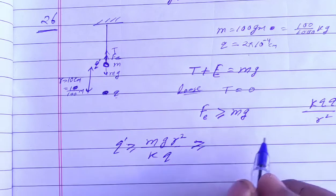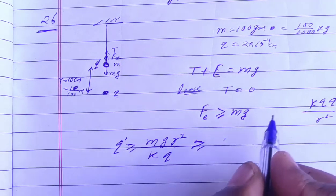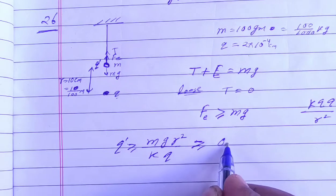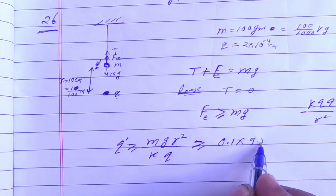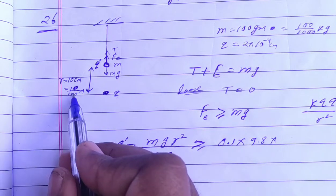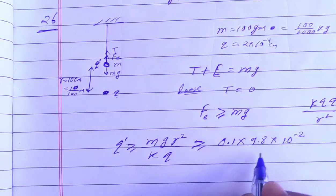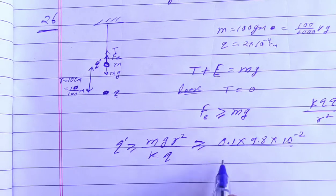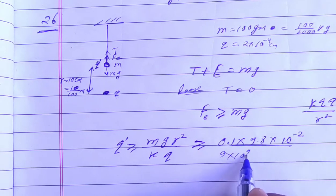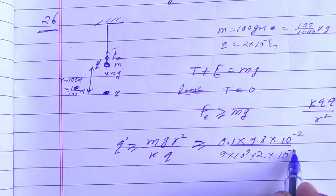m is 100 grams, which is 0.1 kg. g is 9.8 m/s². r is 0.1 m, so r² = 10⁻². K is 9×10⁹, and q is 2×10⁻⁴ coulomb.